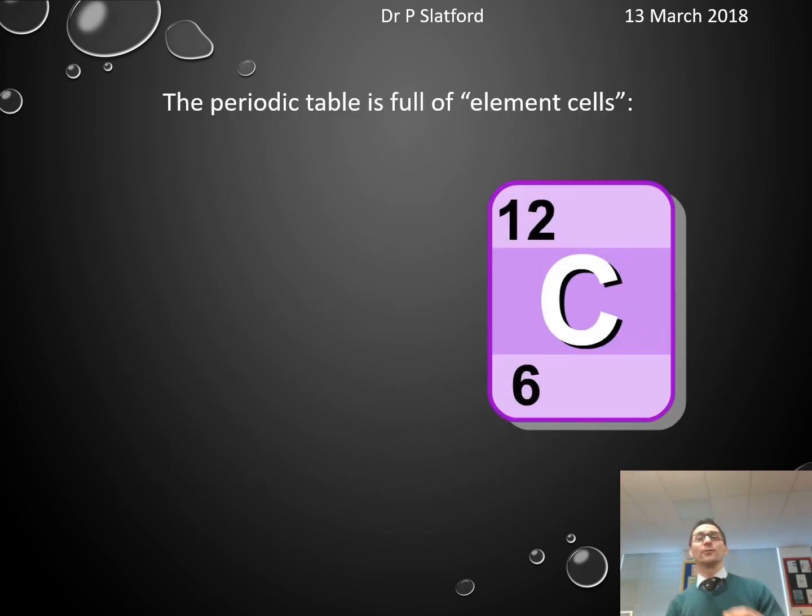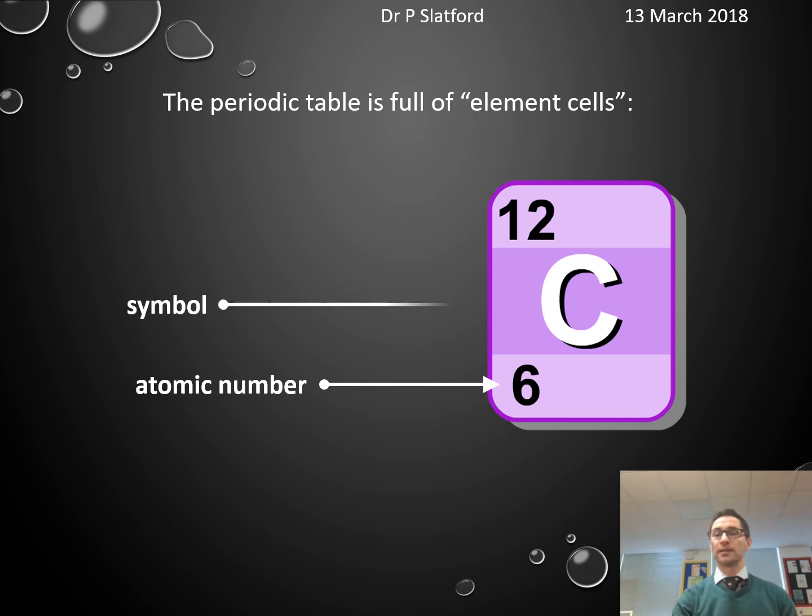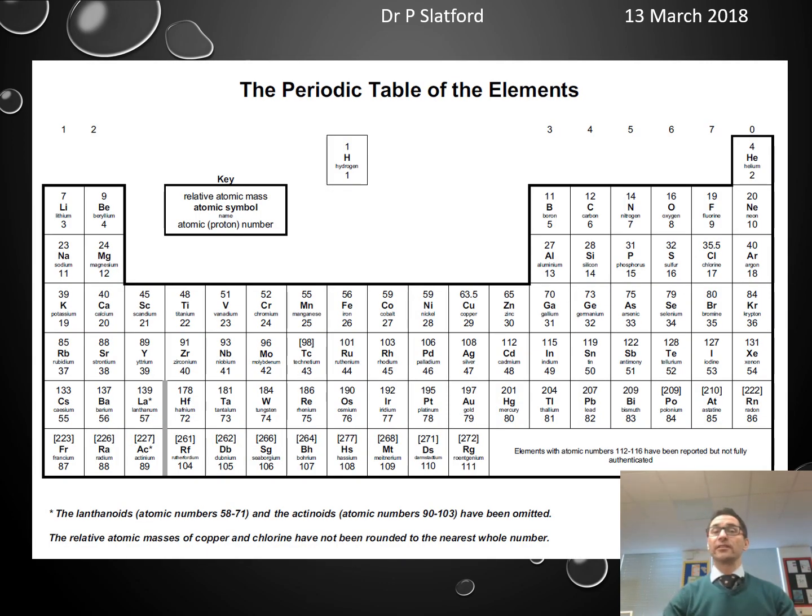The periodic table is full of element cells, and it looks a little bit like this where you've got a small number that is the atomic number, you've got a symbol, and then you've got a relative atomic mass. The periodic table looks a bit like this. It's in order of atomic number.